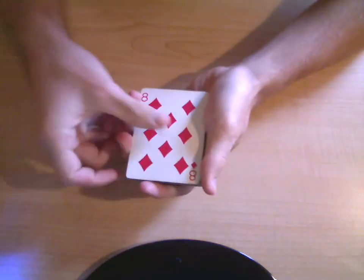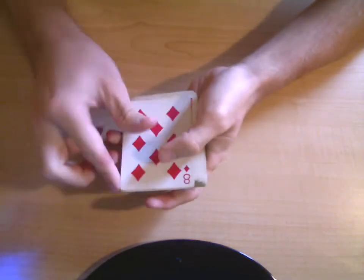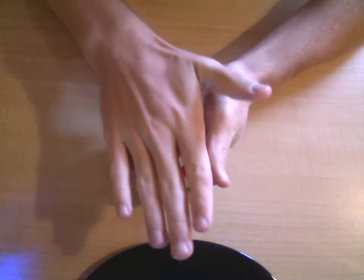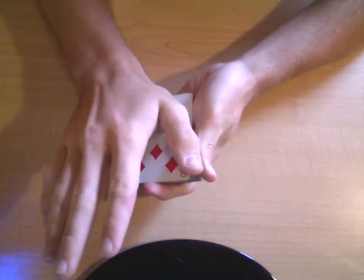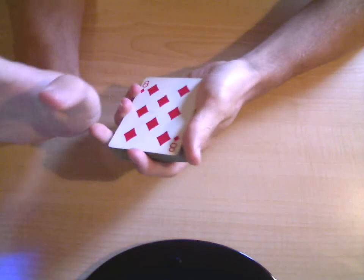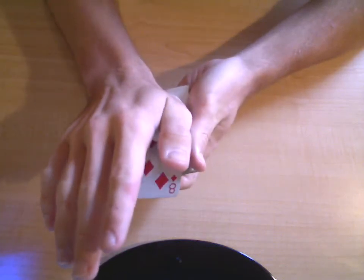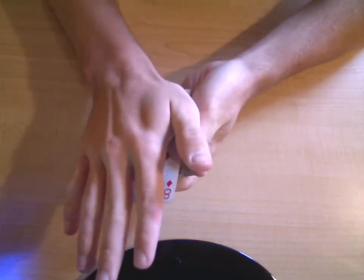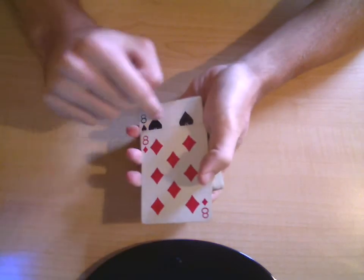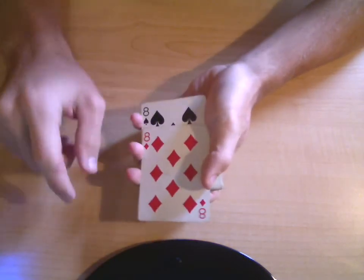And then what you do is, because you have one card that stays up underneath it, you push off with your palm, this part of your palm, push off the top of the 8. Just like that. Just a little bit, not a lot. So that way the other card is revealed.